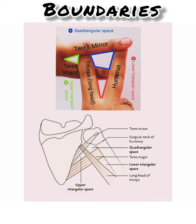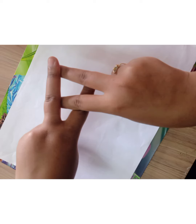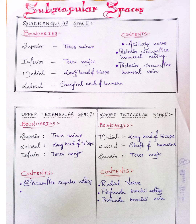It's a very simple way to remember the boundaries. Just by arranging your fingers in this manner, you can easily remember the boundaries of subscapular spaces. Now the contents of the quadrangular space are the axillary nerve and posterior circumflex humeral artery and vein.